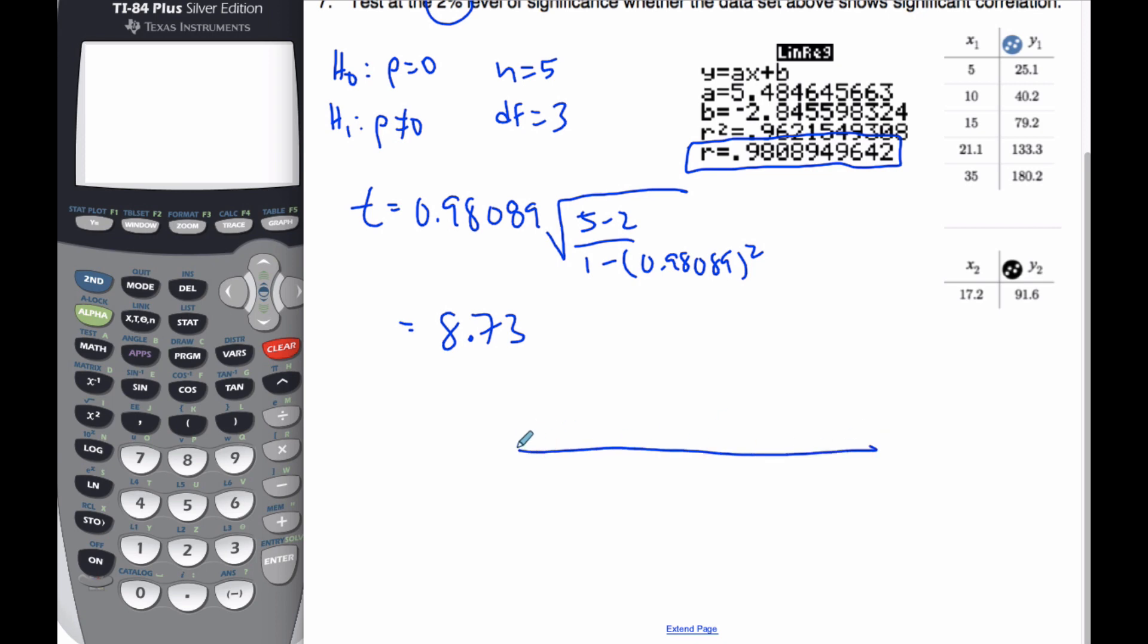If I think about my curve, here's my T distribution which looks fairly normal. I know that 8.73, this is 0, I am looking for this extreme value. And because it's a not-equal-to, I'm looking for the other extreme value here, these two together.